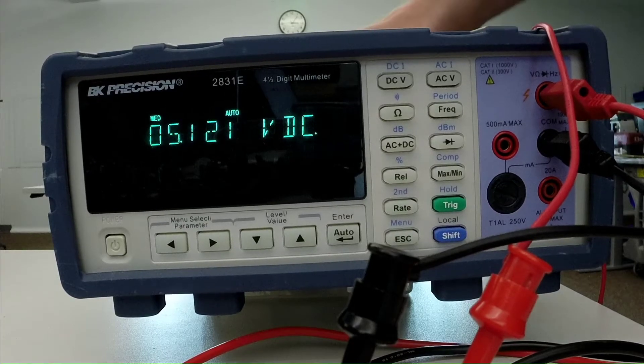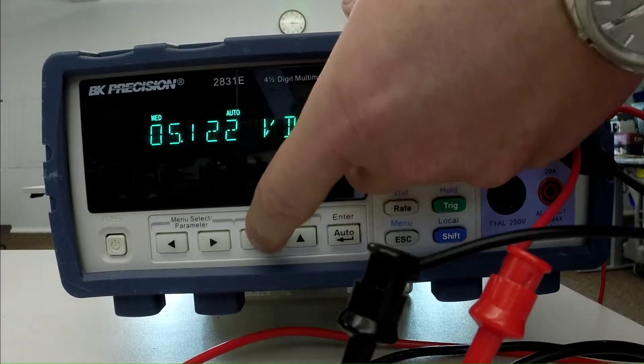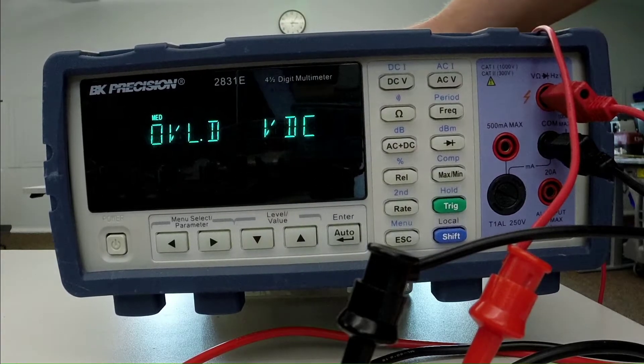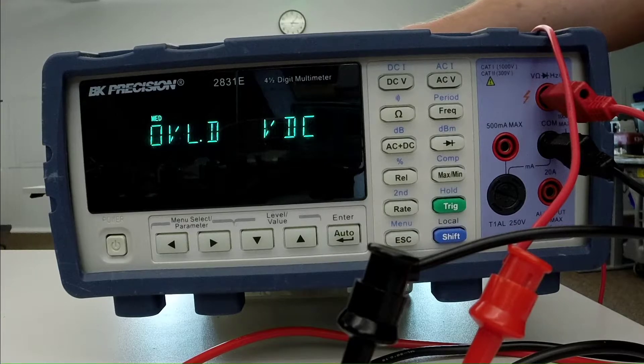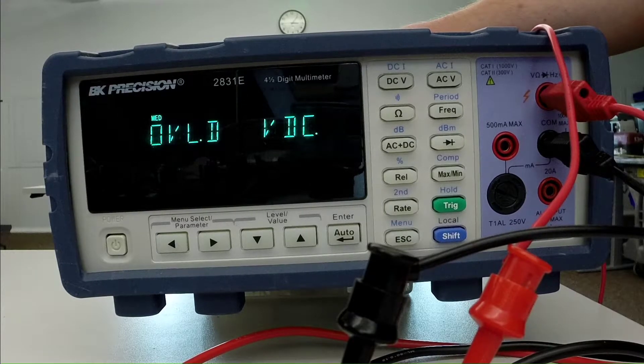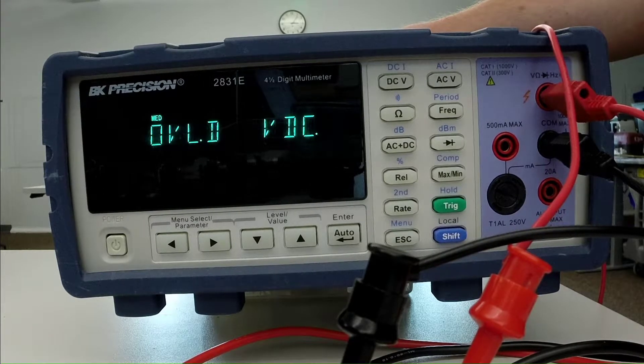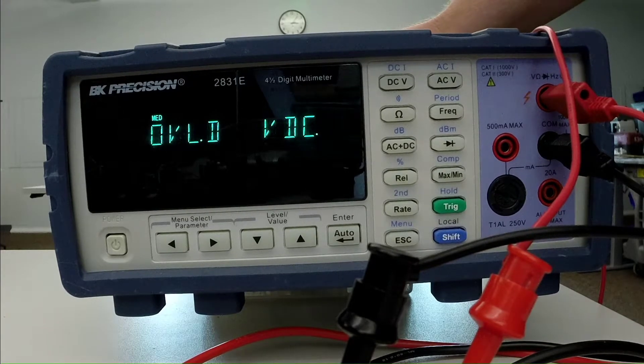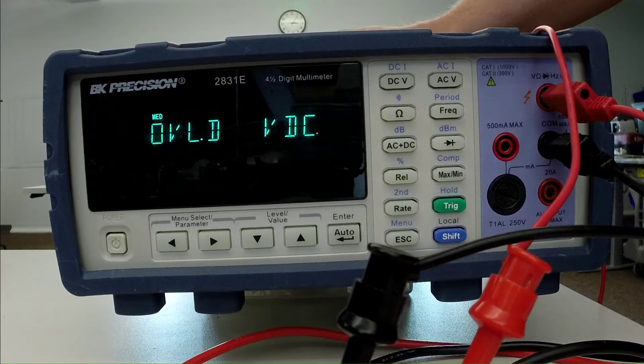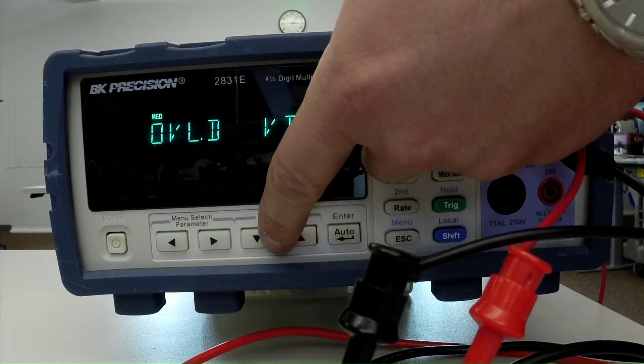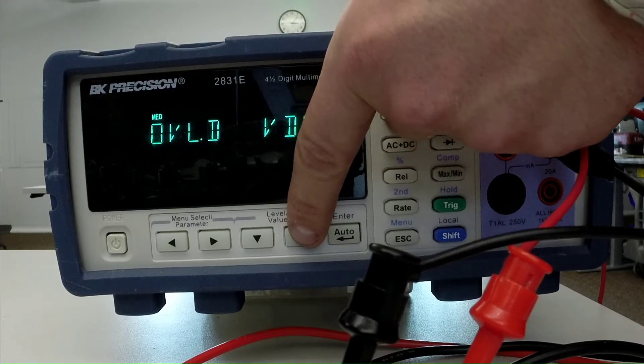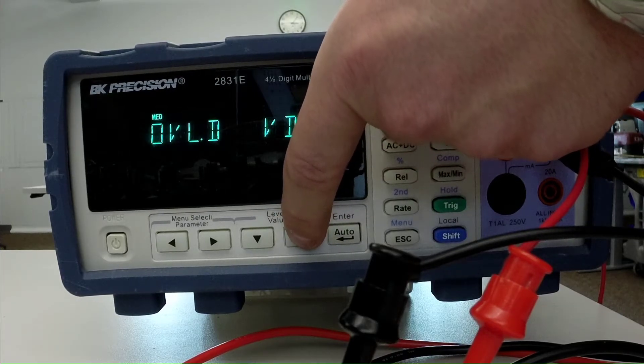Now sometimes when you come in here, you may see a warning sign that looks something like that, where it says OVLD. That means overload. So this is just telling you that the voltage is outside of the multimeter's current range. You can adjust the range that you're looking at with these buttons down here. So there's a range down and a range up. So you can just push the range up to get to a higher voltage. So we're still over two volts, so we're still getting an overload.